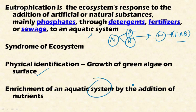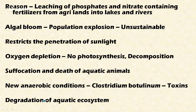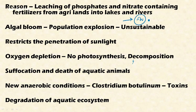Eutrophication is caused by the enrichment of the aquatic system through addition of nutrients. The reason for this enrichment is the leaching of phosphate- and nitrate-containing fertilizers from agricultural land into lakes and rivers, the addition of sewage water into water bodies, and the release of industrial effluents, which also contain significant amounts of nutrients.